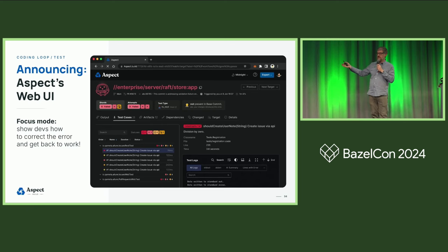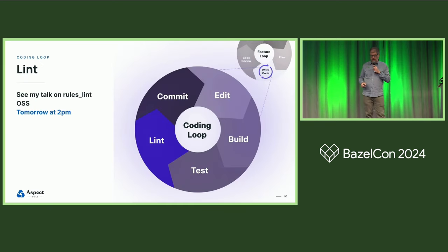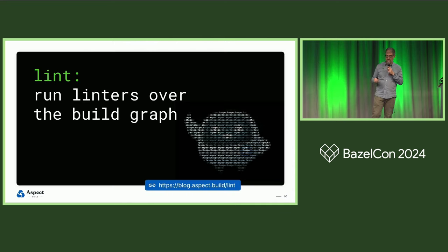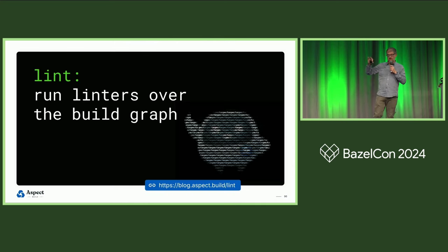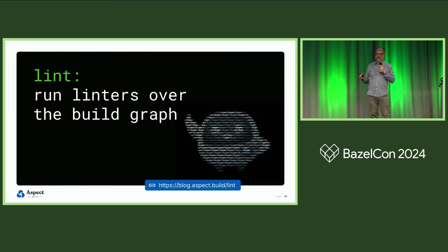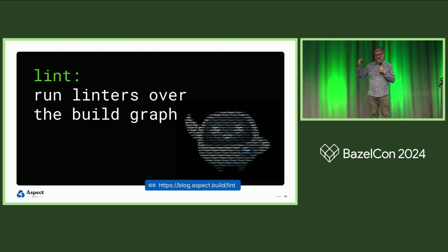There's a lot more than I can show right now. Please come by our booth and we'll show you a live demo of our web UI. For lint, I have a talk tomorrow on the open source part of Rules Lint. The lint command in the Aspect CLI will run all linters for all languages across your graph, and it also offers to apply those fixes in interactive mode — showing you each fix and letting you decide whether to apply it.